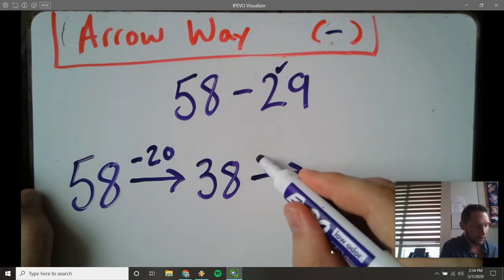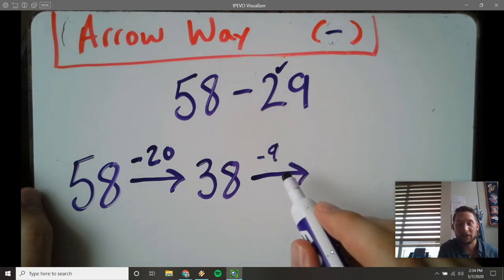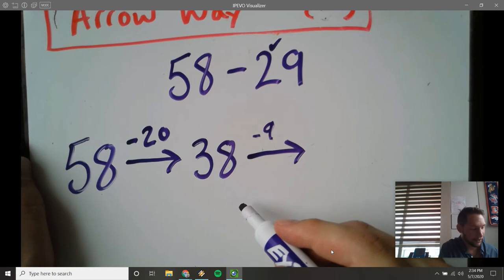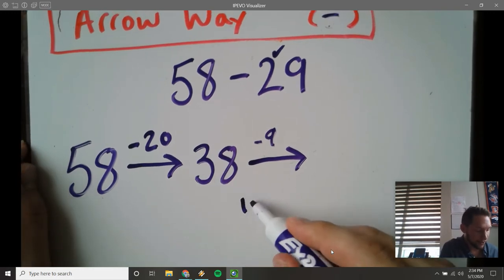Now minus 9. 38 minus 9. I can count in my head, I can count on my fingers. I could even put a little dashes down here if it helps me. I need 9: 1, 2, 3, 4, 5, 6, 7, 8, 9.